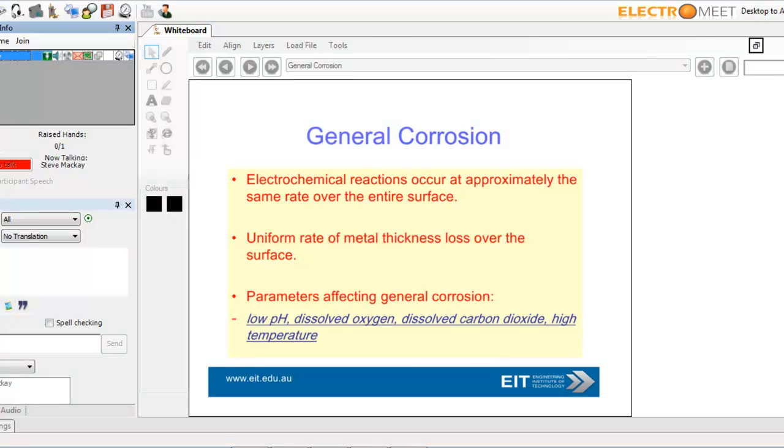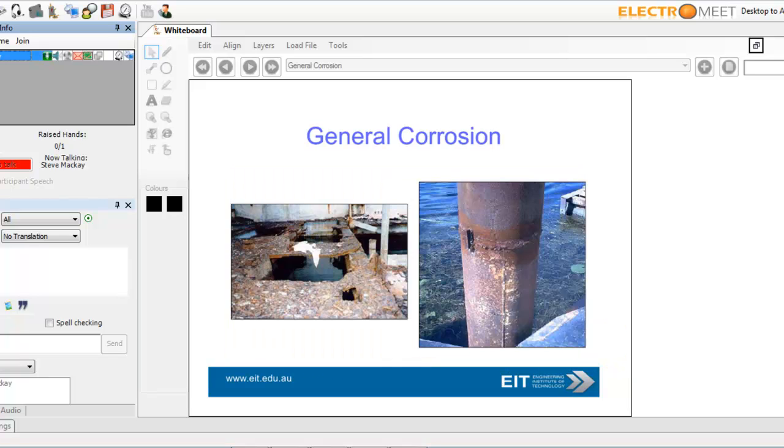I'm not going to go into too much detail here. Typical parameters affecting corrosion are pH, dissolved oxygen, dissolved carbon dioxide, high temperature. These are examples of corrosion - nice background of the sea, but basically often associated with the marine environment.